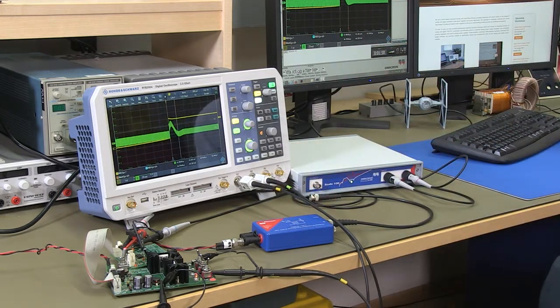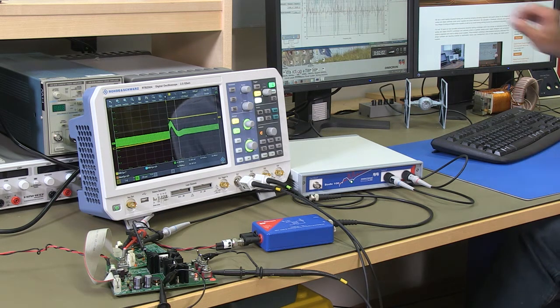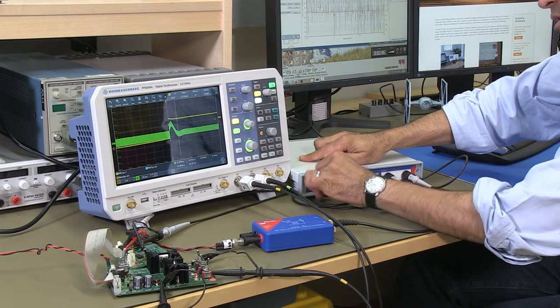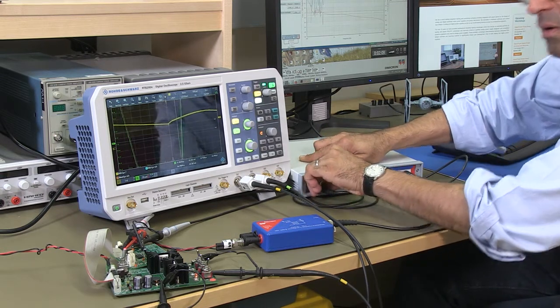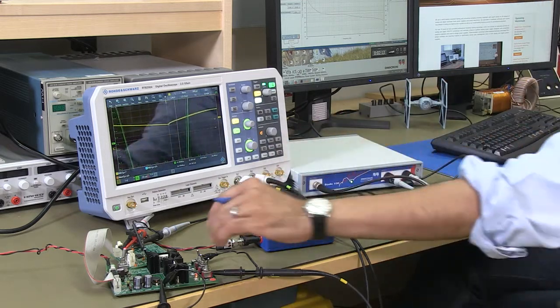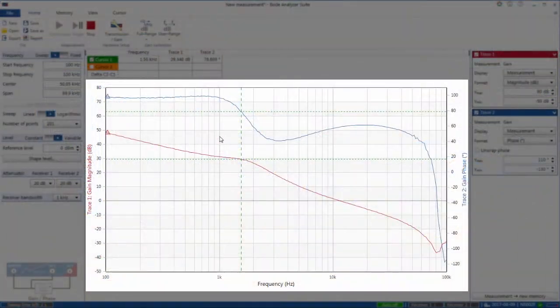So I'm now going to go to Bode 100. I am measuring the loop. Let us connect and go to continuous conduction mode first. You'll see the classic shape of a voltage mode buck converter.